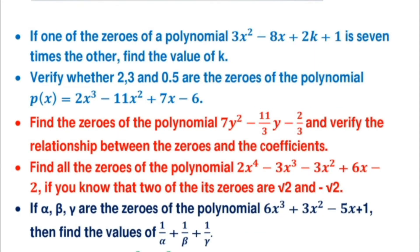Suppose there is a question like: if one of the zeros of the polynomial 3x² − 8x + 2k + 1 is 7 times the other, find the value of k. This type of question is important for your board exam. Here, a relationship between two zeros of the polynomial is given and you have to find the value of the unknown term k.